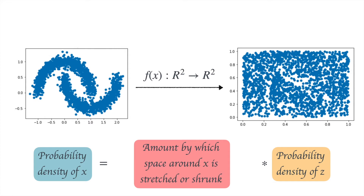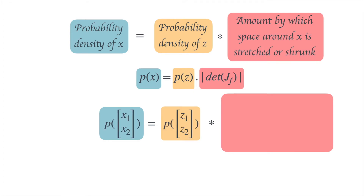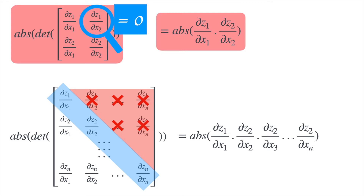We saw that if a function maps x to z, then the probability density of x is equal to the probability density of z times the amount by which the space around x is stretched or shrunk. This can be written as P(x) equals P(z) times the absolute value of the determinant of the Jacobian of the function f that maps x to z. We also saw that if we made one of the terms not on the main diagonal equal to zero, it would make it very easy to evaluate the determinant — it would simply be equal to the product of the values along the main diagonal.